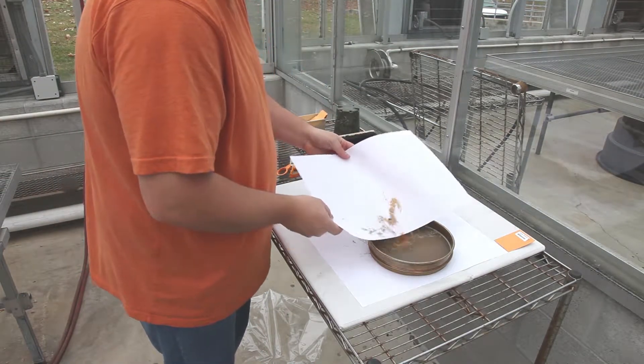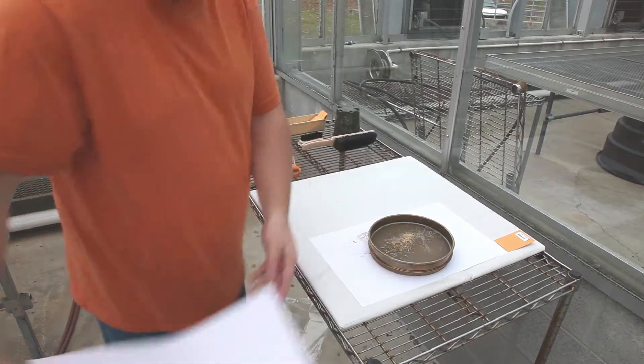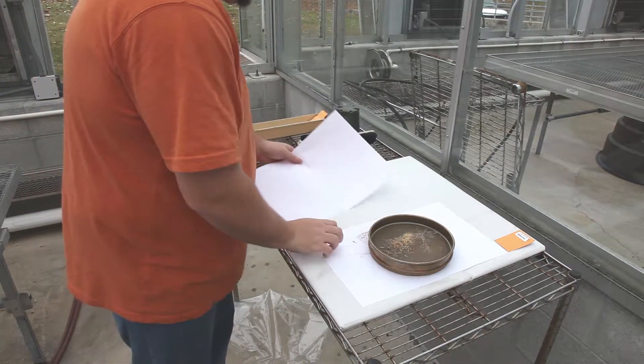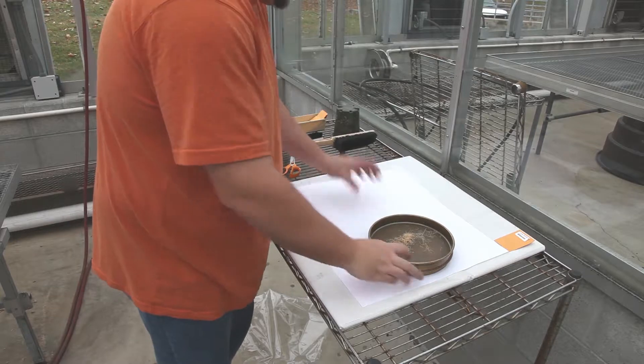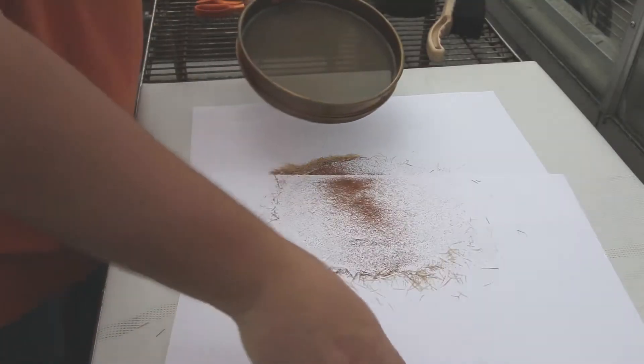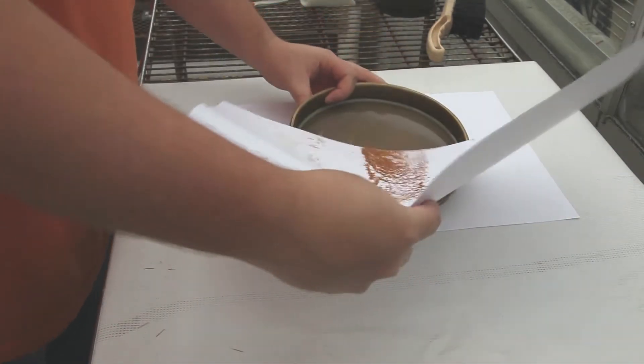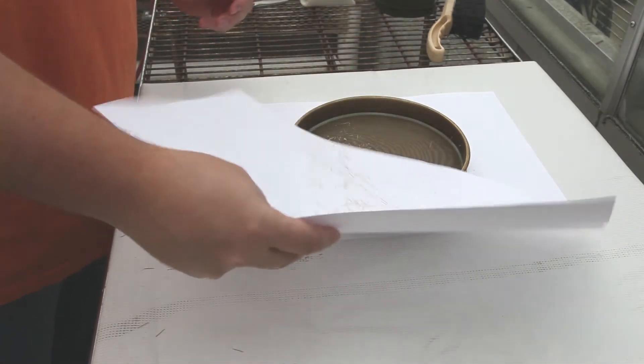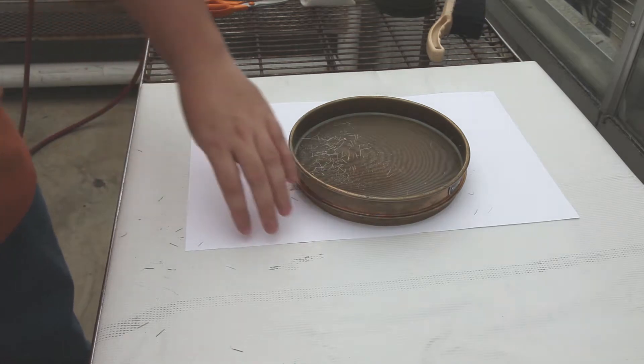Placing a new piece of clean paper under the sieve, dump the material collected from the first pass through back into the sieve. Continue to pass the collected material through the sieve to remove the small pieces of plant debris known as chaff.